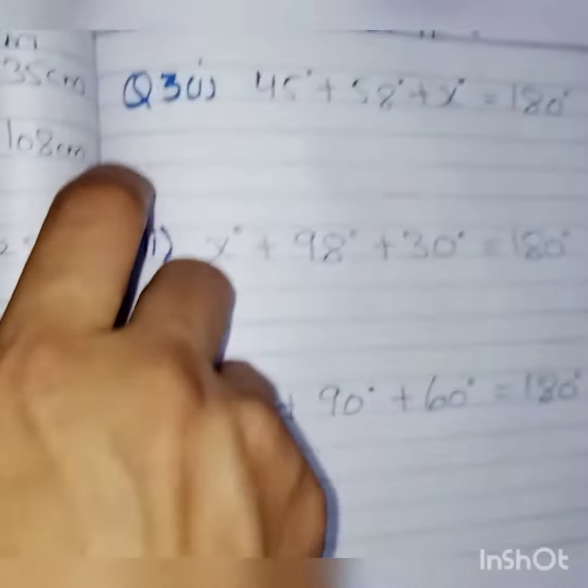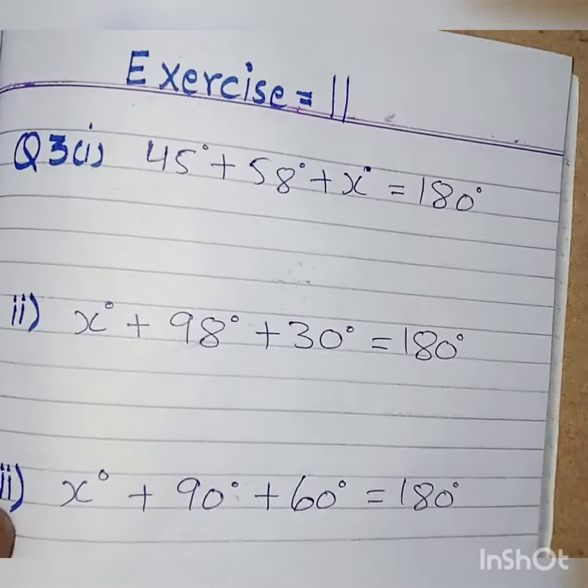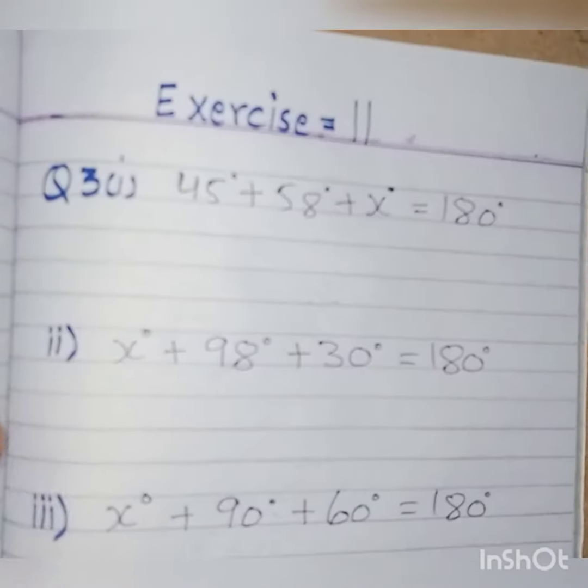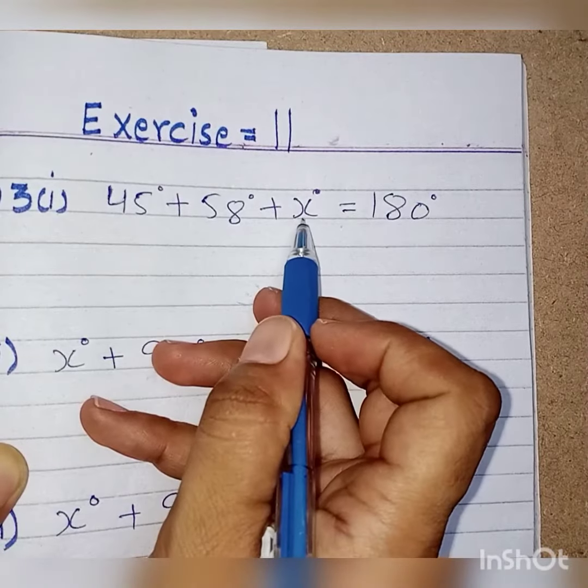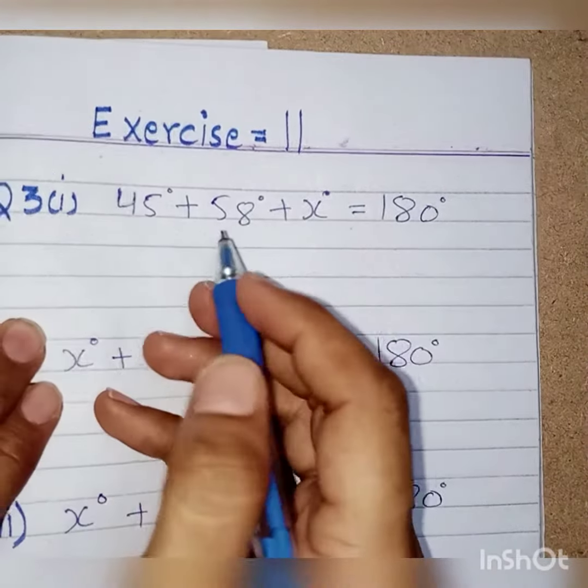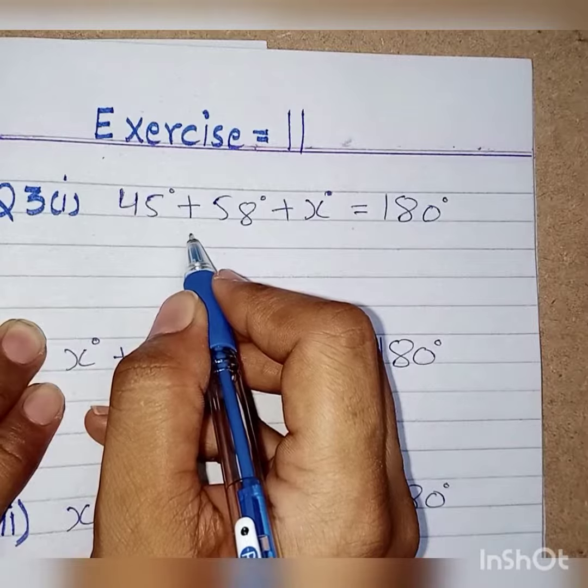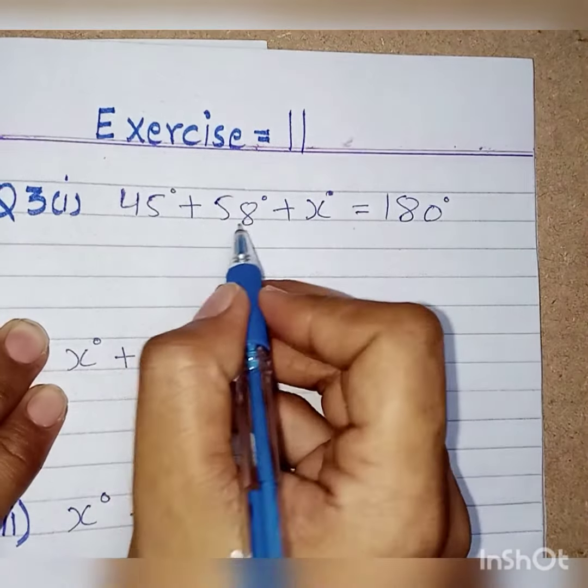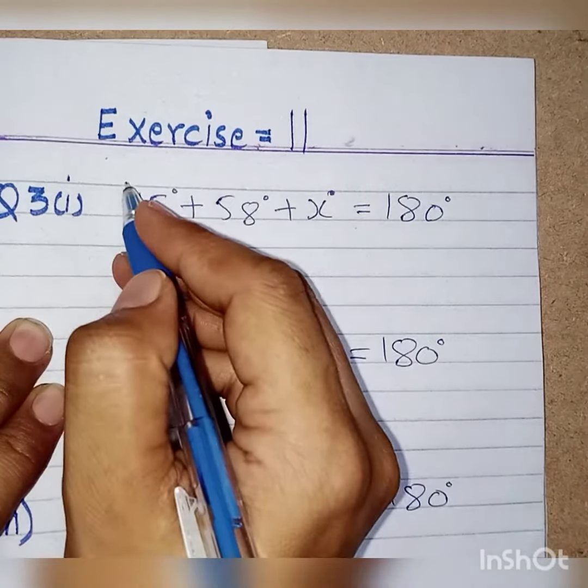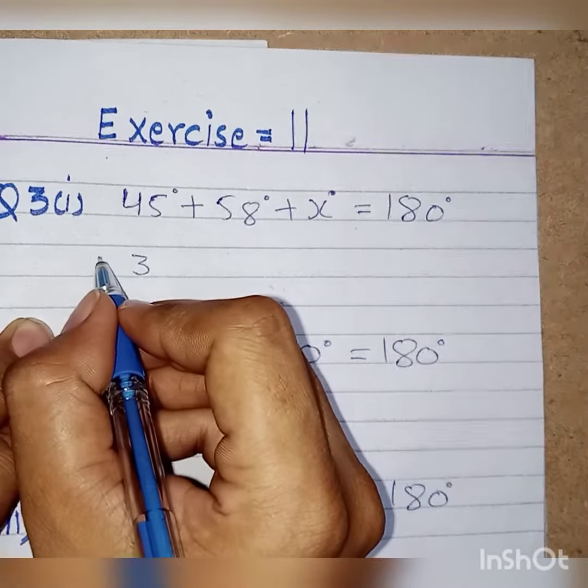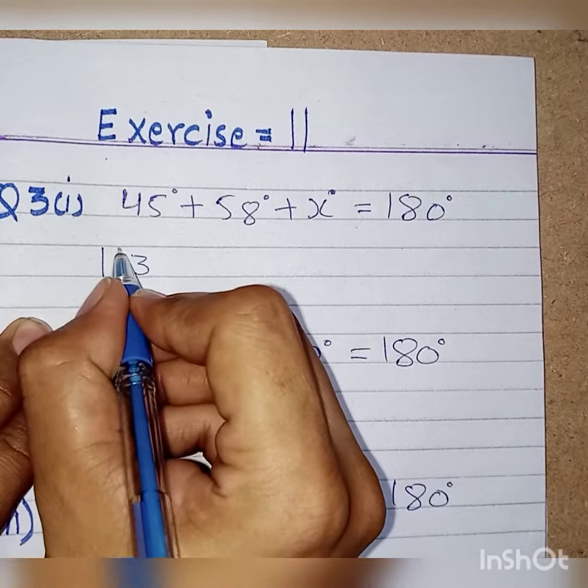So here we have the information given. Here we have 45 degrees, 58 degrees, and x. We will find x. So 45 plus 58, when we add them, 5 plus 8 is 13, carry 1, then 4 plus 5 plus 1 gives us 113.